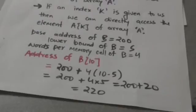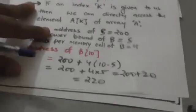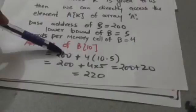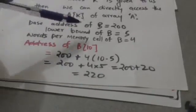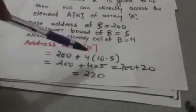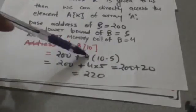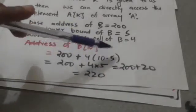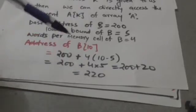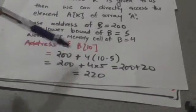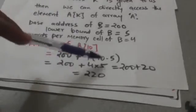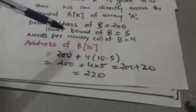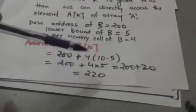Now we have to calculate the address of element B[10]. It would be equal to base address plus words per memory cell of array B times (10 minus lower bound), which equals 200 plus 4 times (10 minus 5), which equals 200 plus 20, equals 220. So the address of element B[10] is 220.